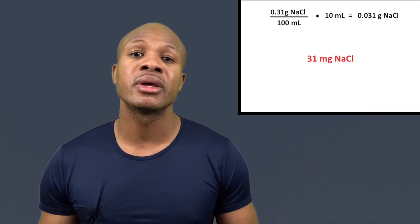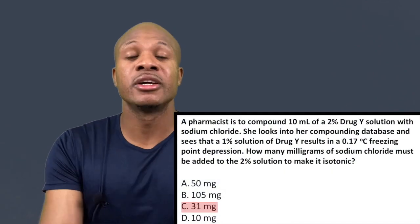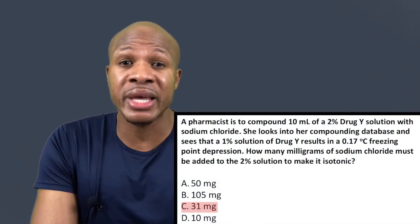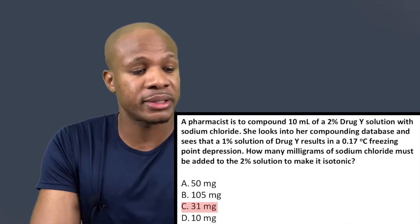A 0.31% sodium chloride solution means 0.31 grams of sodium chloride per 100 milliliters — that's the definition of percent. The total volume of the solution we're making is 10 milliliters, so we multiply by 10 to get 0.031 grams of sodium chloride. Multiplying by 1000 gives us 31 milligrams. So to make this solution isotonic we must add 31 milligrams of sodium chloride. The answer is choice C.